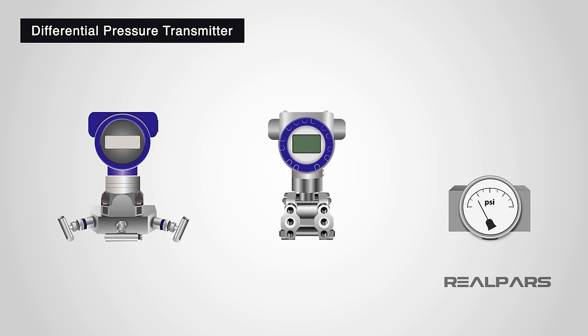You will most likely use these units of measurement in your work, as they are commonly used and almost every manufacturer of pressure measurement devices calibrates them to these units of measurement. Now that we know a little bit about pressure, let's discuss how a differential pressure transmitter actually measures pressure and tells us what the pressure is. From now on in this lesson, we are going to use the terminology that is utilized in the industry when we talk about differential pressure transmitters.